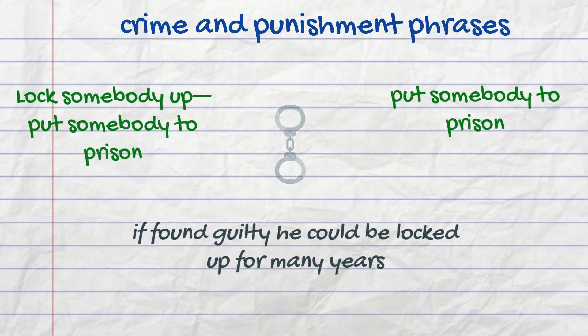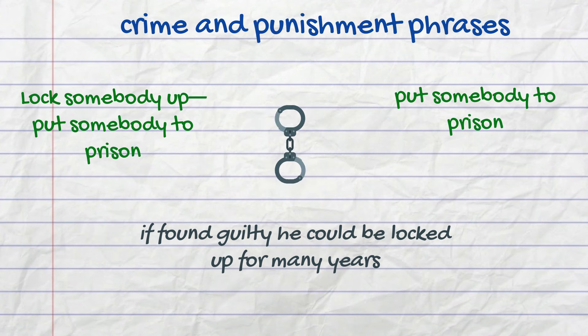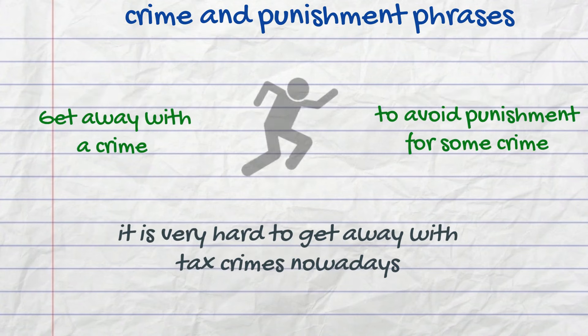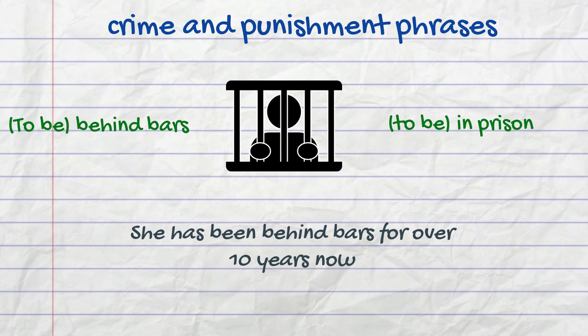Now let's take a look at some crime and punishment related phrases. 'Lock somebody up' means put somebody in prison. For example: if found guilty, he could be locked up for many years. 'Get away with a crime' means to avoid punishment for some crime. For example: it's very hard to get away with tax crimes nowadays, with all those modern communication systems in place. 'To be behind bars' means to be in prison. For example: she has been behind bars for over 10 years now.